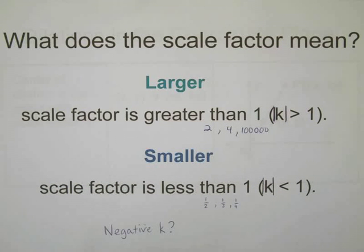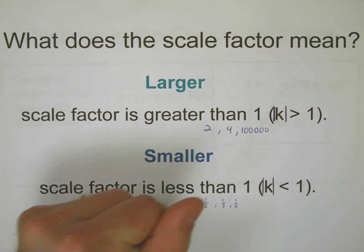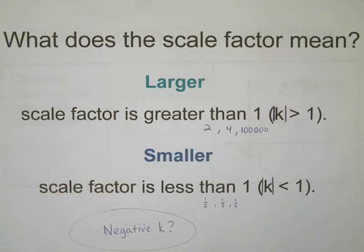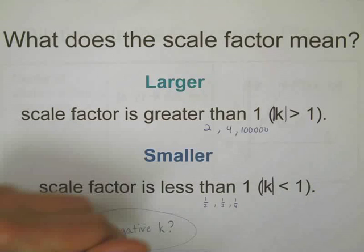That means that the image is going to be smaller after I redraw it. Now absolute values are always positive so we haven't mentioned anything about a negative k value.